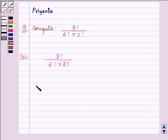We can write 8 factorial as 8 multiplied by 7 multiplied by 6 factorial, right? Because 6 factorial will include all the natural numbers from 6 to 1. Now putting this in the given term we have